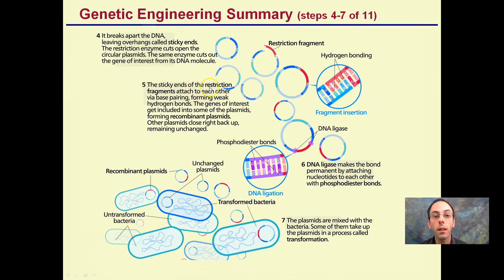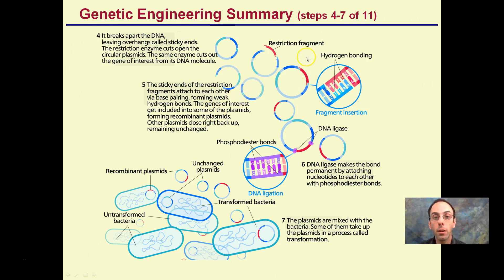Moving to step five: the sticky ends of the restriction fragments attach to one another via base pairing — A binds with T, G binds with C. The gene of interest gets included into some of the plasmids, forming recombinant plasmids. It's important to note it's only some of the plasmids — not every single plasmid takes in that gene of interest. They form weak hydrogen bonds, while other plasmids close right back up, remaining unchanged.